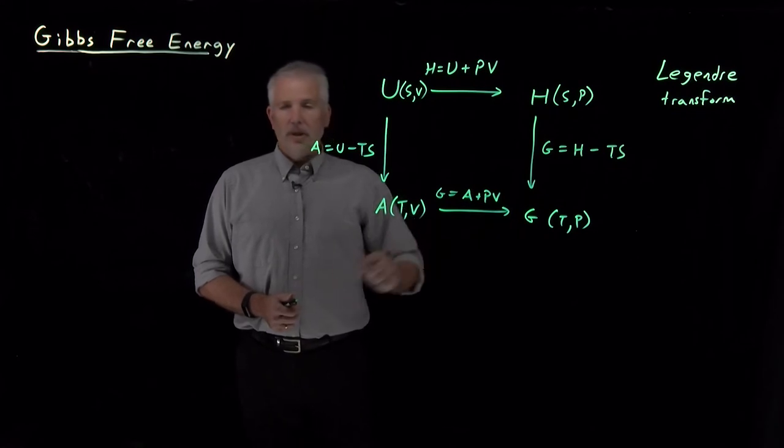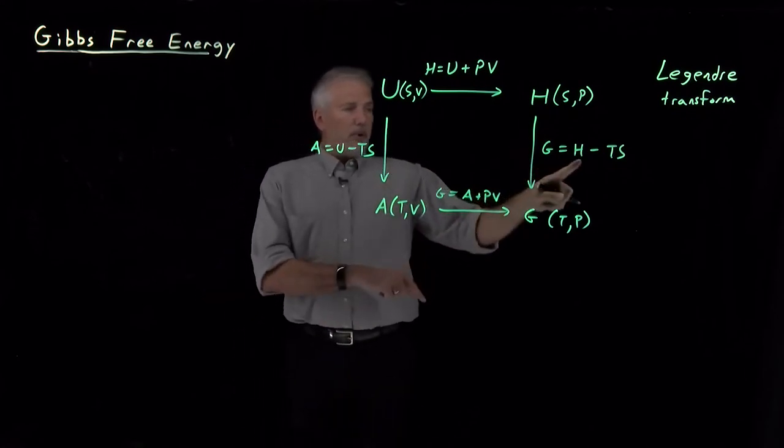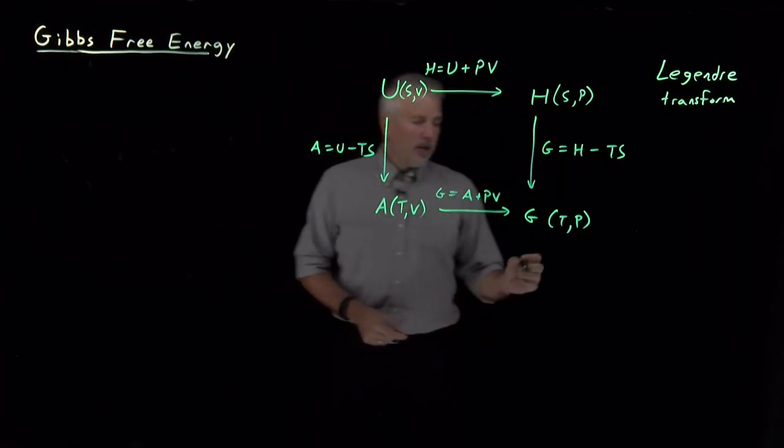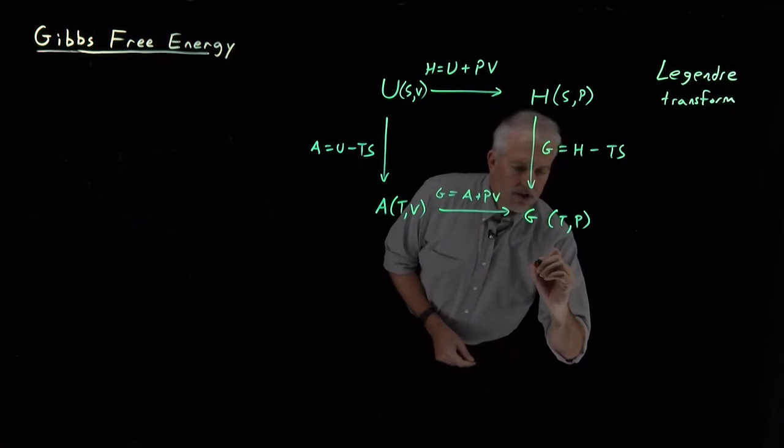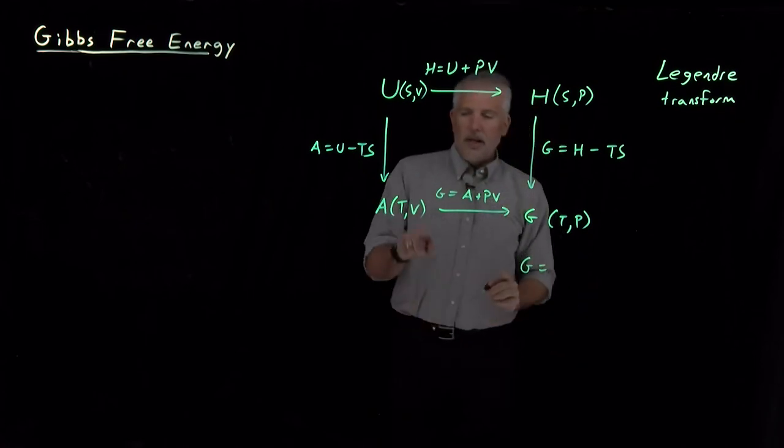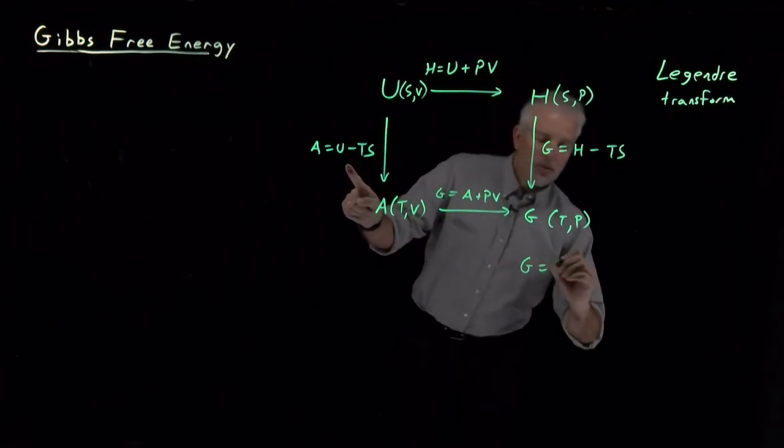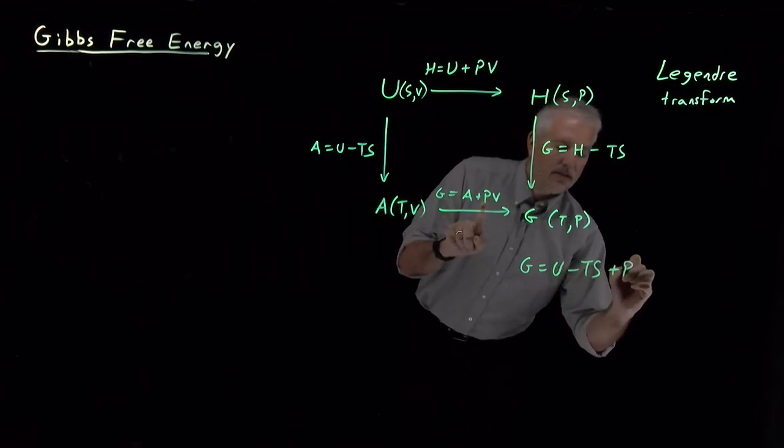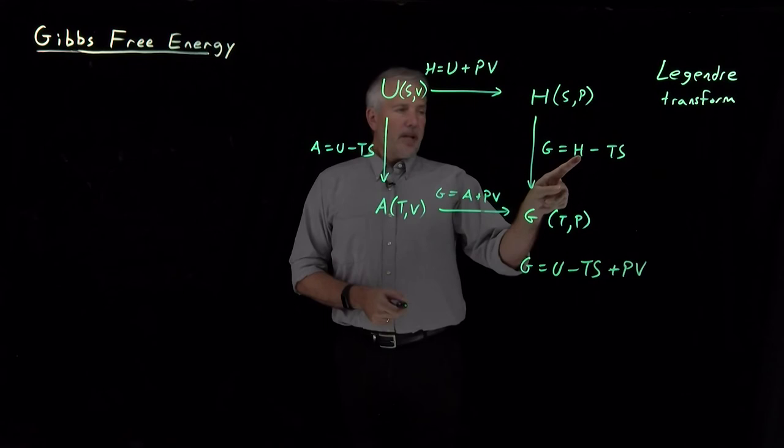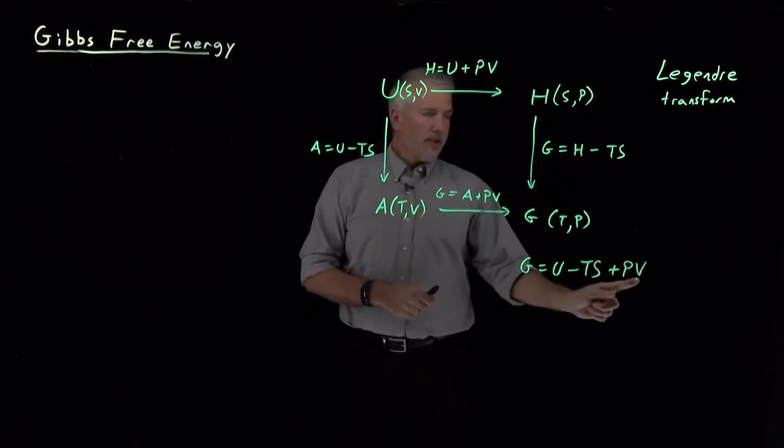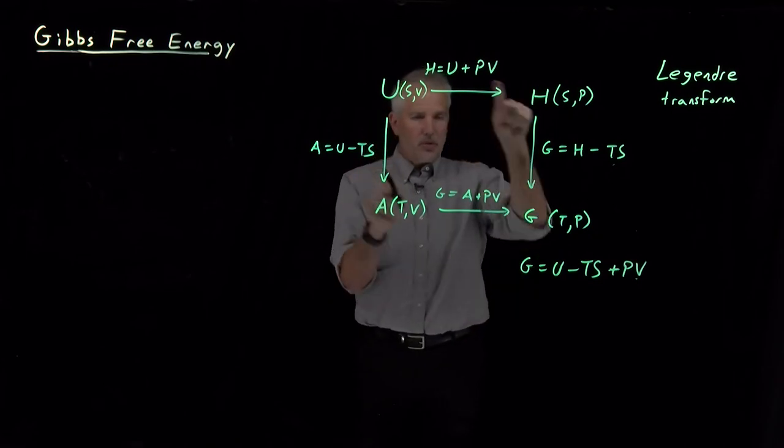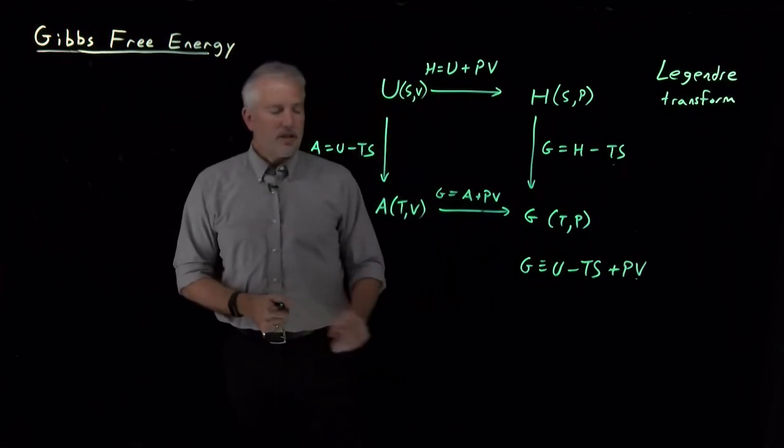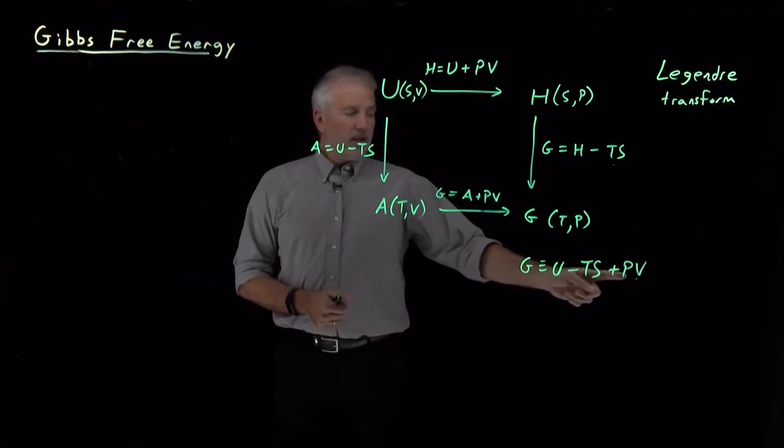Both of those will lead to the same product because both the enthalpy and the Helmholtz energy were themselves defined using the internal energy. So the more fundamental definition of the Gibbs free energy, whether I think of it as A plus PV where A is U minus TS, or I could think of it as enthalpy U plus PV, if I subtract TS from it I get the same thing. So both of these routes took us to the same place. Because this Gibbs free energy we're defining, our definition of the Gibbs free energy is that it's the internal energy minus T times S plus P times V.